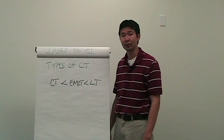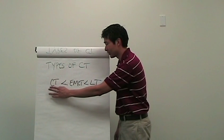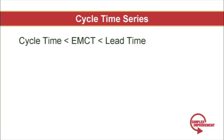Now just as a general rule of thumb, your cycle time, or in this case your observed cycle time, will be less than your effective machine cycle time, and this will be less than your lead time.